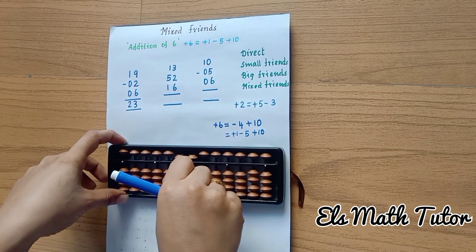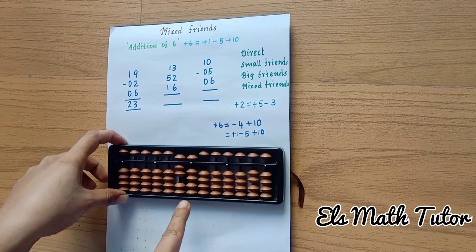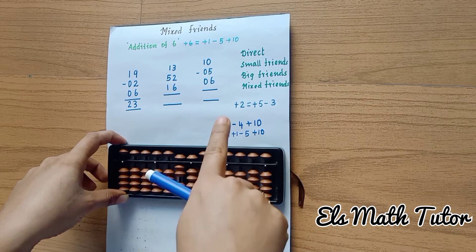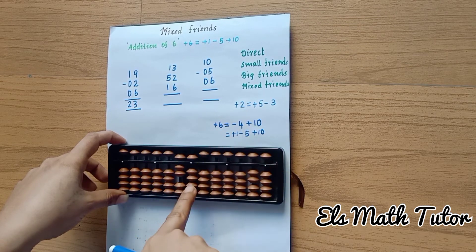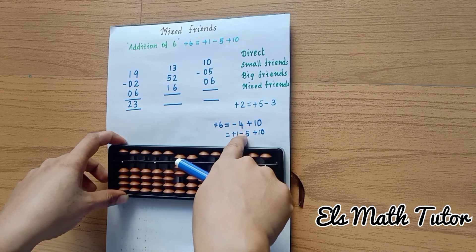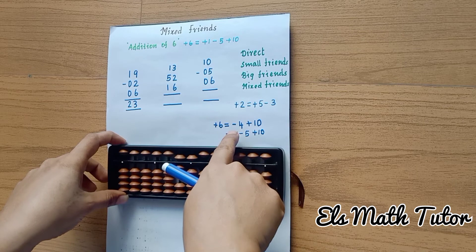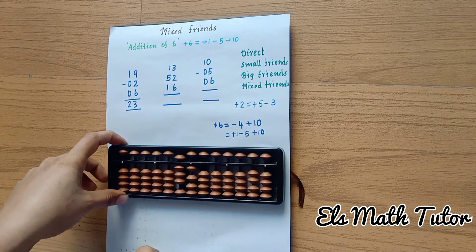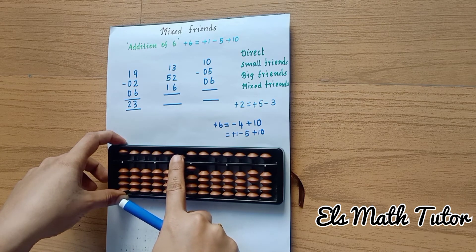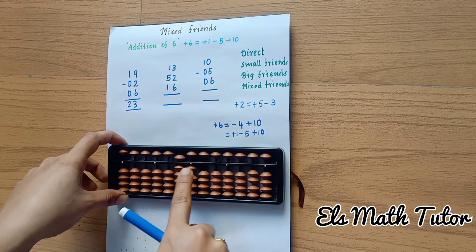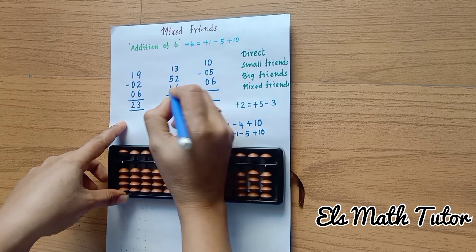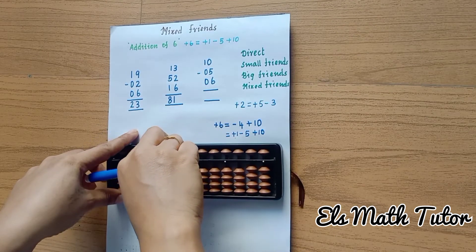Next, add sixteen: here ten in the tens place, and we should add six in the ones place. What is the six formula? Plus six is equal to minus four plus ten. Minus four we are also not able to do, so instead of minus four we take the small friends formula: plus one minus five. That is plus one minus five, then add ten. What is the answer? Fifty, sixty, seventy, eighty, plus one — eighty-one.